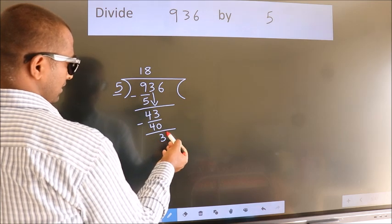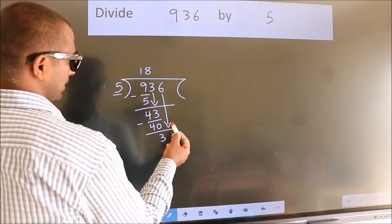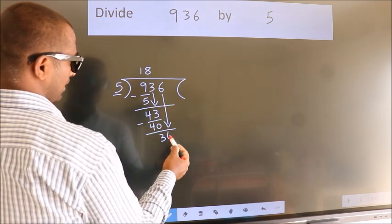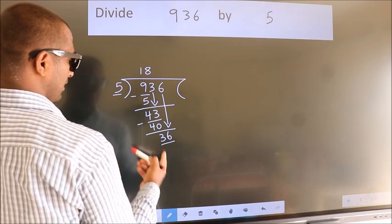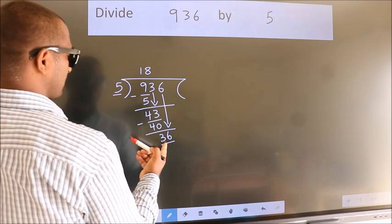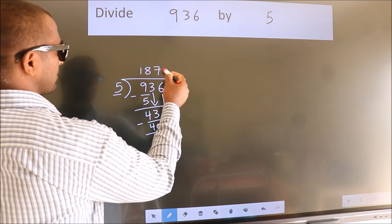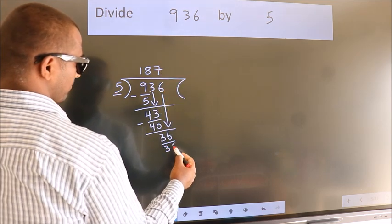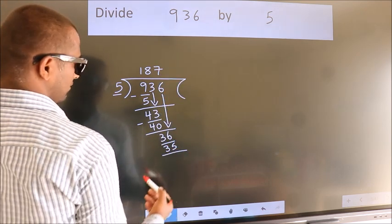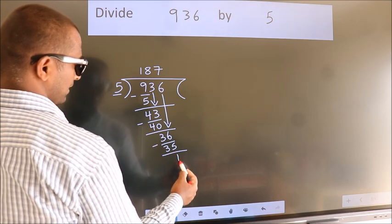After this, bring down the beside number. So 6 down. So 36. A number close to 36 in 5 table is 5 times 7, 35. Now we subtract. We get 1.